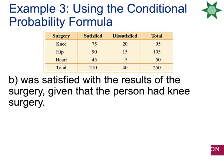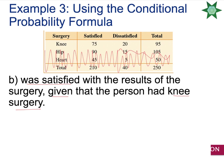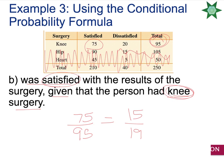If one person was selected at random, what was the probability that this person was satisfied with the results given that they had knee surgery? That knocks out all heart and hip patients — you focus specifically on the knee patients. Since you were told they had knee surgery, you're only looking at 95 people. Of those 95, what's the probability the one you picked was satisfied? There were 75 out of 95 satisfied. Reduce the fraction and you get 15 out of 19.